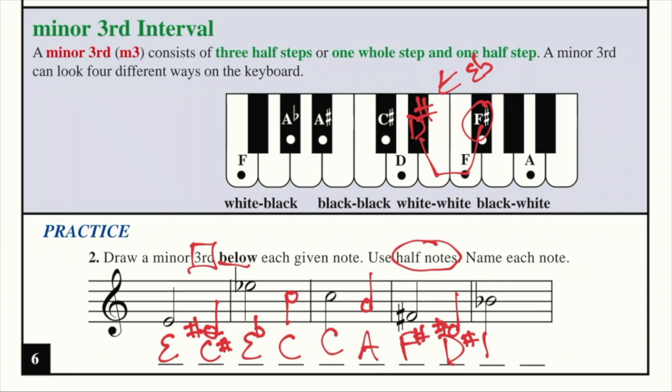The last example is B flat. Ignore the flat. Countdown 3 from B. B, A, G. And now we're going to start on B flat and go a whole step and then a half step, which leaves us with G.